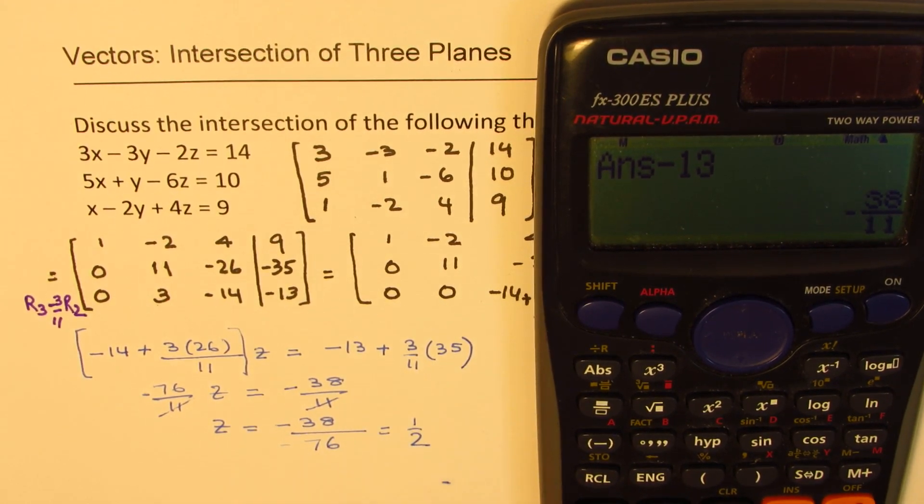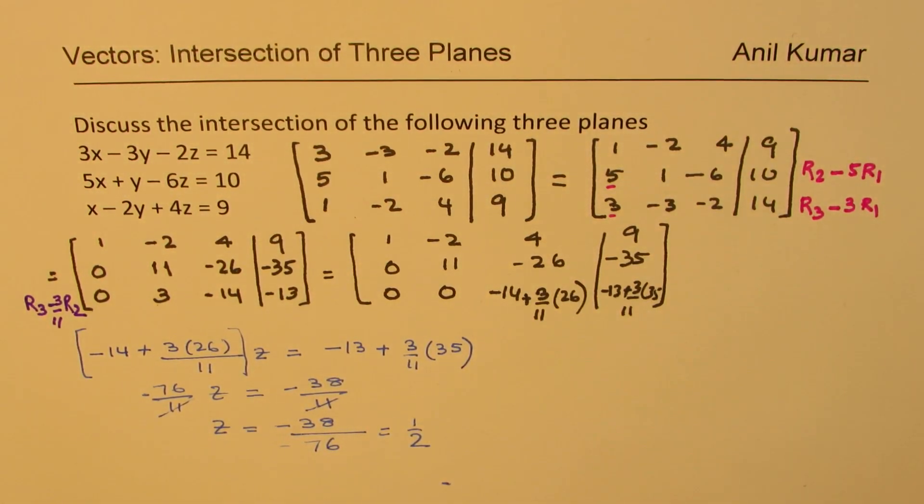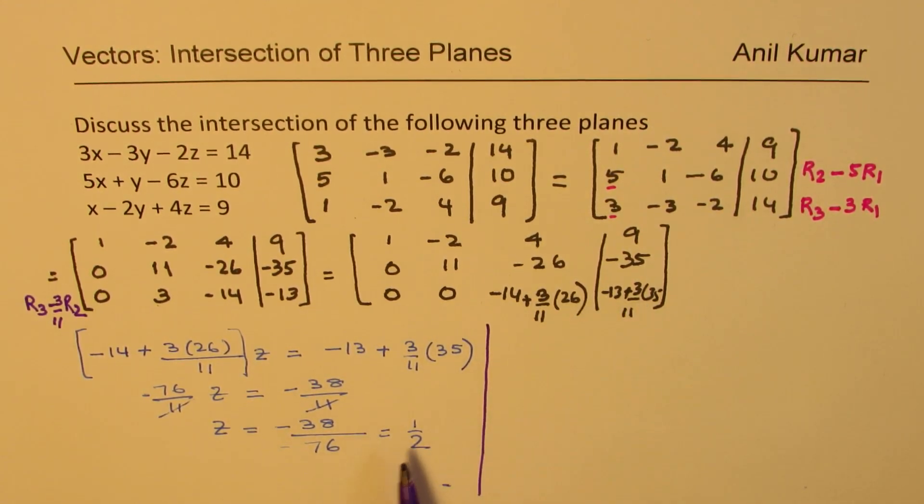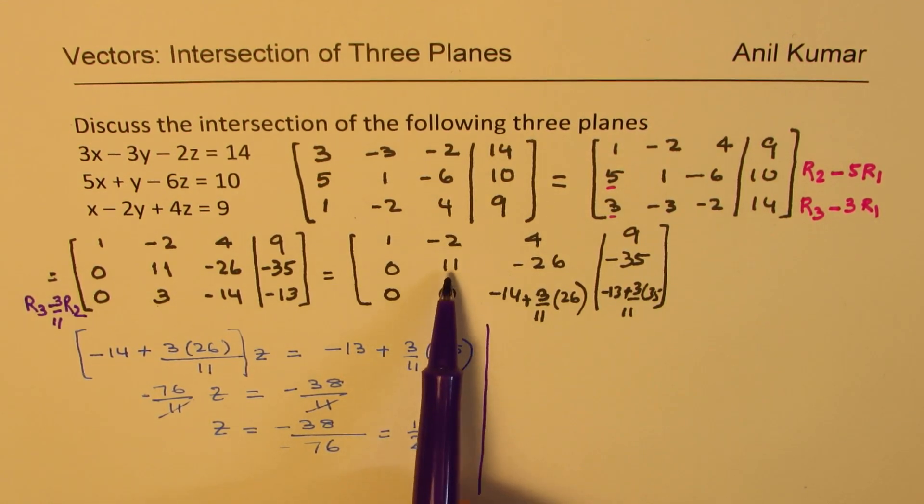So the value of z which you get here is half. Slightly difficult values to work with. However, you understand that by this simplification, we do get the value of z directly. So z is half.